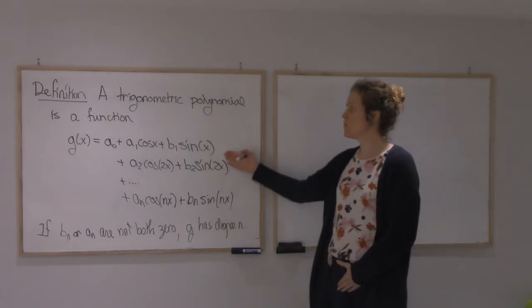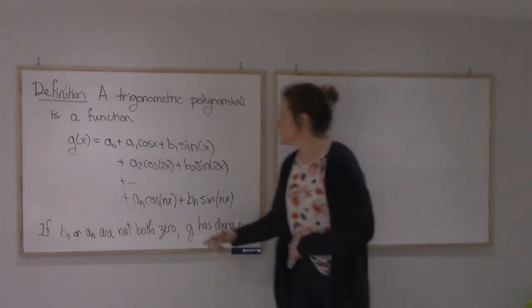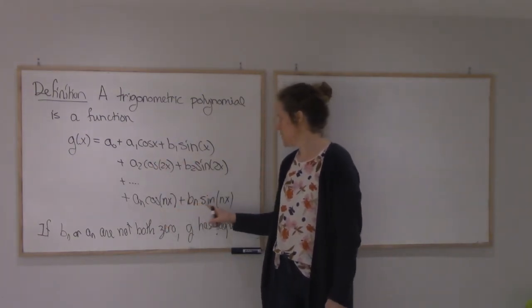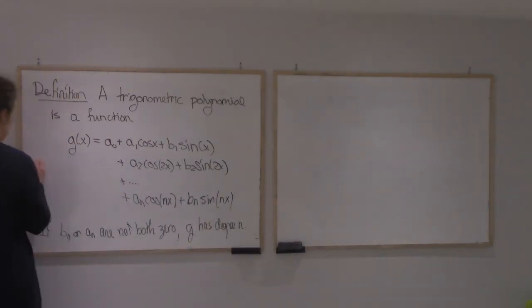The W we'll use is the W of all these functions. Written like this, you can see that it's generated by one, cosine, sine, cosine 2, sine 2, cosine nx, sine nx, because here a0, a1, an are real numbers, so are b1, bn.